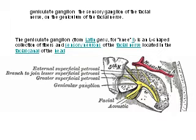The geniculate ganglion. Geniculum in Latin means knee, and at the knee of the facial nerve where it bends acutely backwards is an L-shaped collection of fibers and sensory neurons. This is located in the facial canal of the head, and the geniculate ganglion is the sensory ganglion of the facial nerve on the geniculum of the nerve.